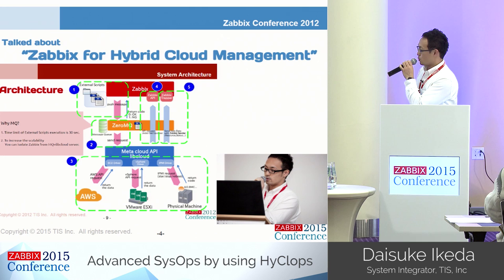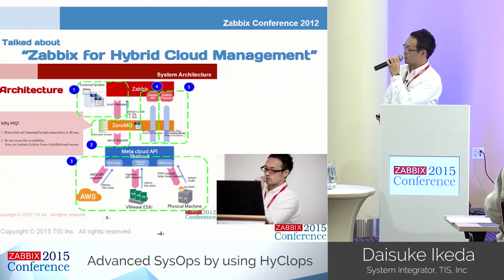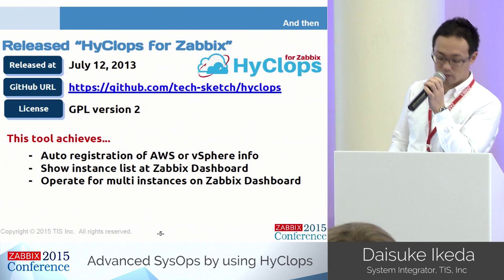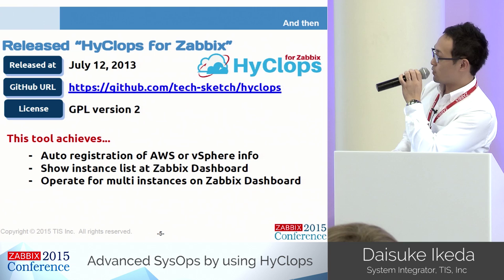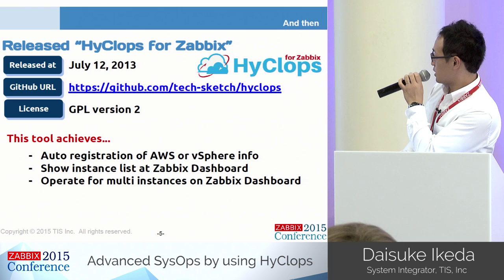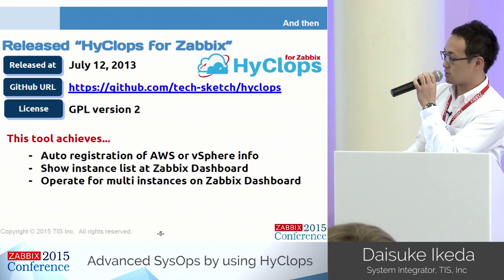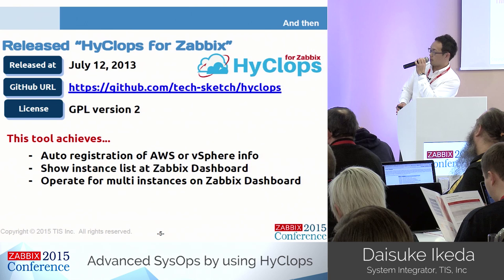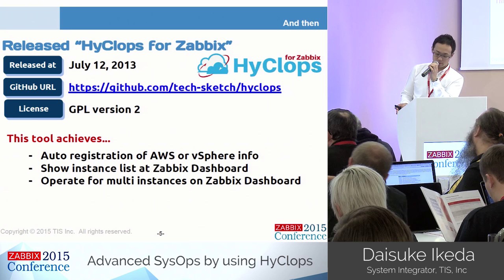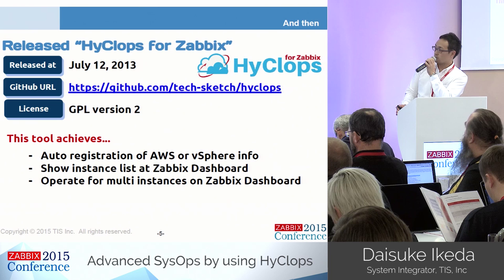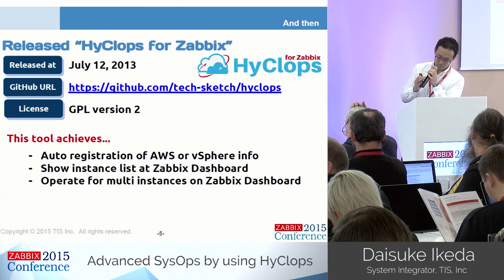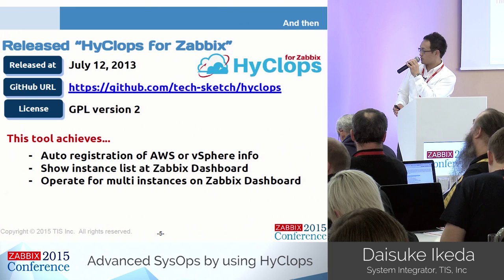After that conference, we released this tool — named Hycrops for Zabbix — as OSS in July 2013. Hycrops for Zabbix has three features. By calling AWS API and vSphere API regularly, Zabbix monitors AWS EC2 instance statuses and vSphere. It also registers Zabbix hosts and updates or deletes them automatically. By customizing the Zabbix dashboard, you can see the list of instance statuses, and you can operate multiple instances from the dashboard at once.